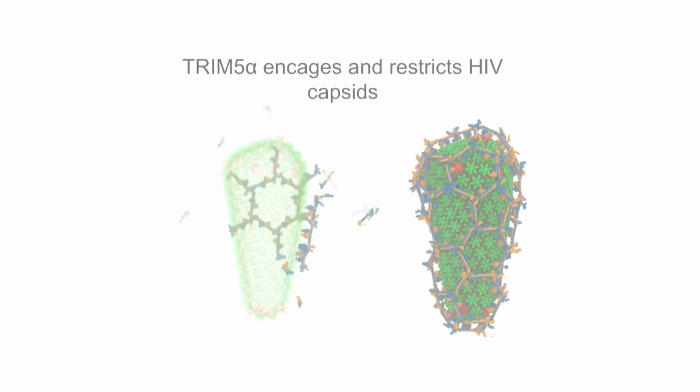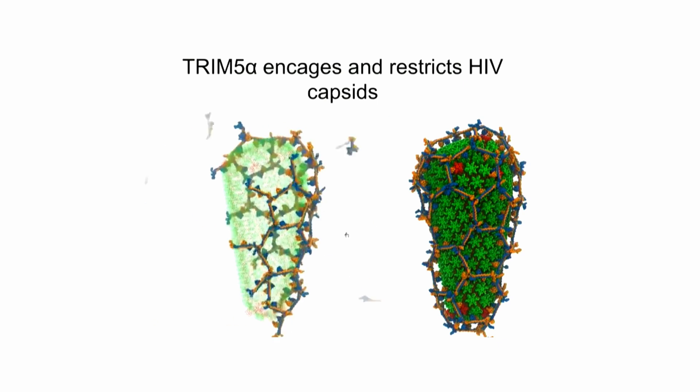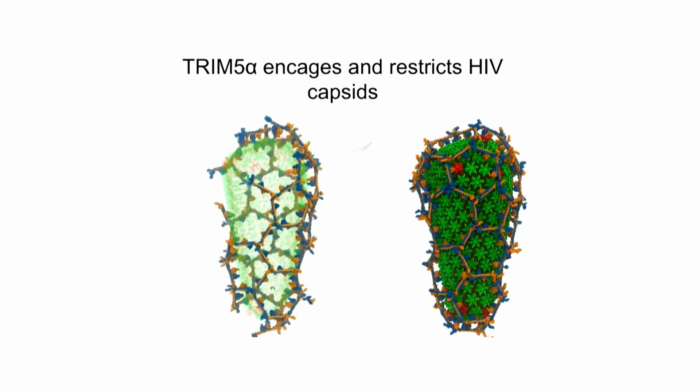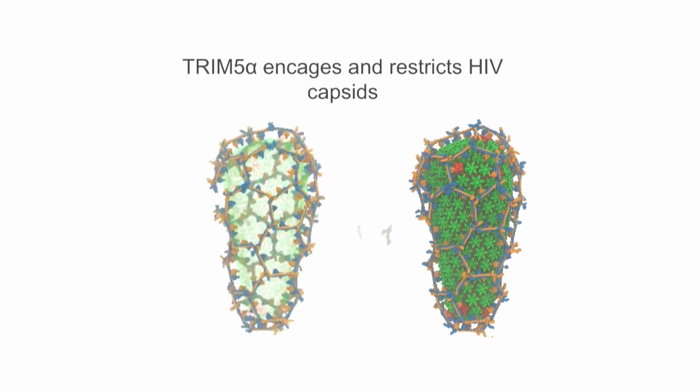Old world monkeys actually can't get SIV, which is the cousin of HIV in humans, whereas new world monkeys can and humans can, obviously. We have a gene called Trim5-alpha, which basically fits around the capsid of the virus like a baseball in a glove and prevents it from infecting. It seems like Trim5-alpha once protected against an HIV-like pathogen in the primate genome, but then there was a challenge from a massive endogenous retrovirus, so bad that the genome lost the ability to fight off HIV-like viruses in order to restrict that endogenous retrovirus.